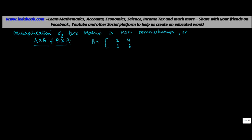Let's say you have two matrices where A is equal to [2, 3, 4; 6, 5, 7] and B is equal to [6, 3; -9, -8; 4, 7]. Let's find out A×B and B×A.